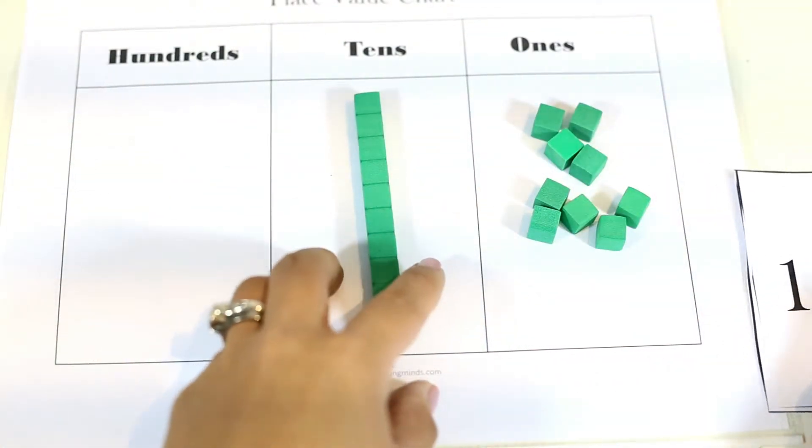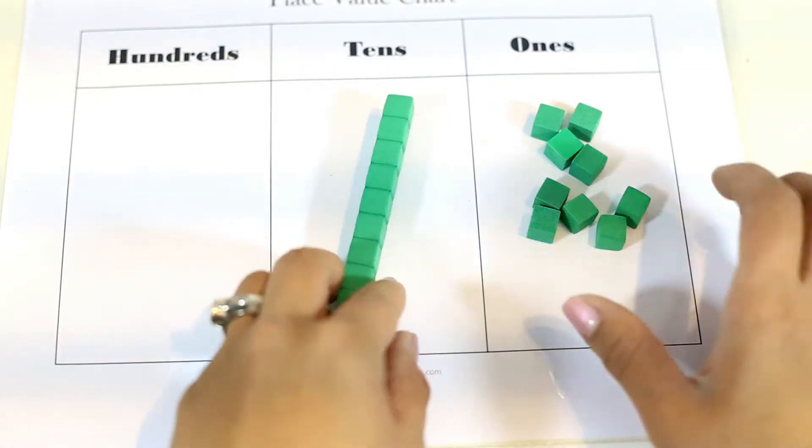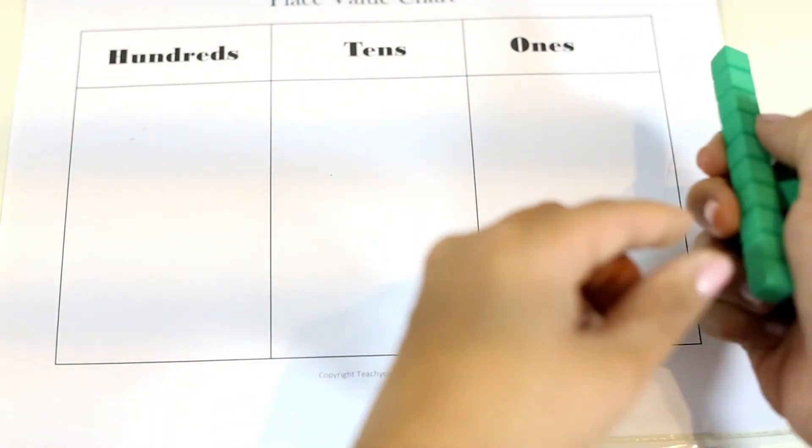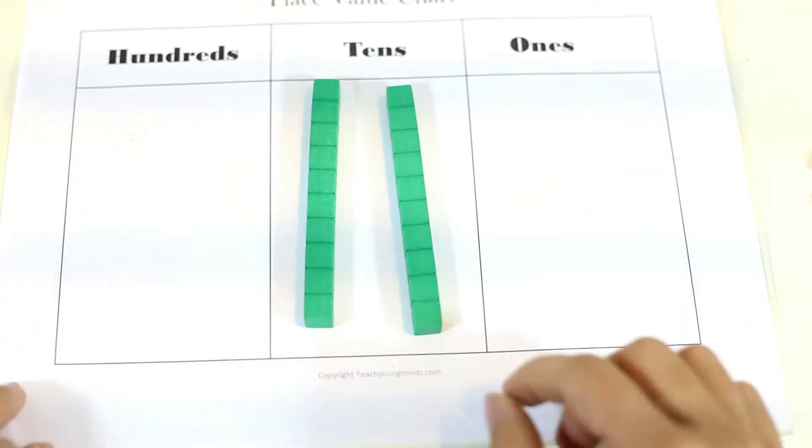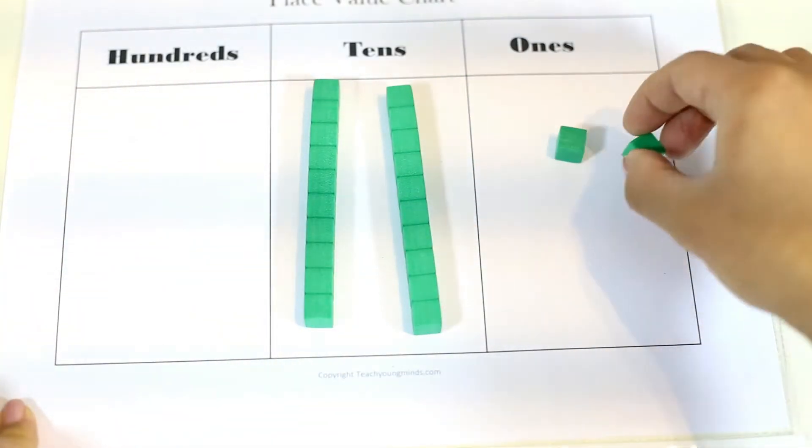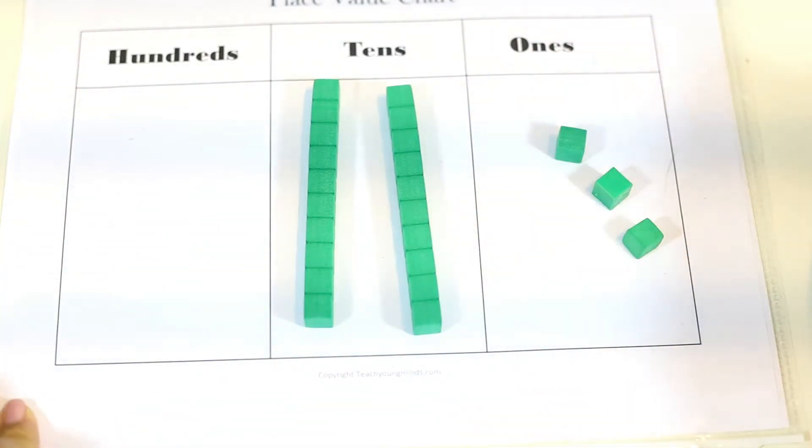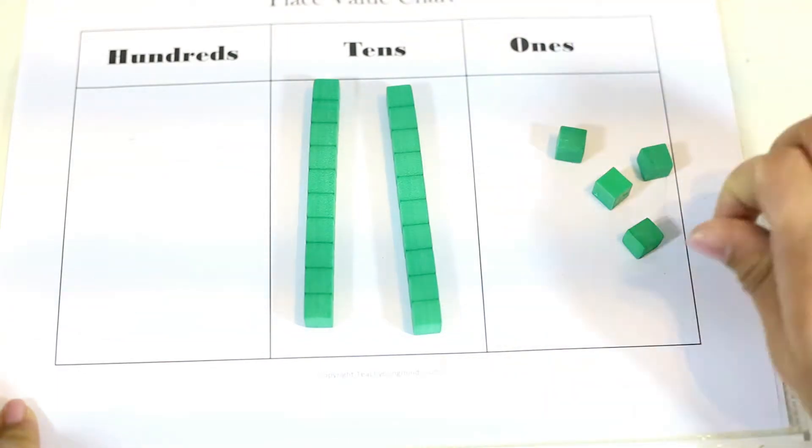They can also do it where they don't even have a card. You can just tell them to build a number. For example, I want them to build 25. They can count by tens. 10, 20, 21, 22, 23, 24, 25.